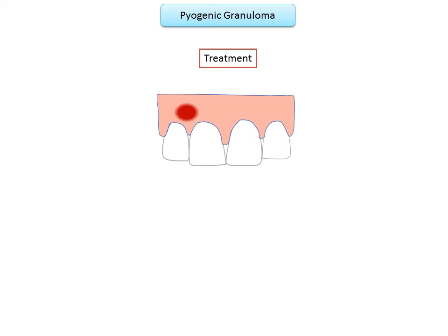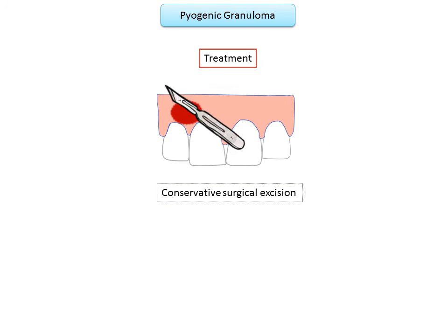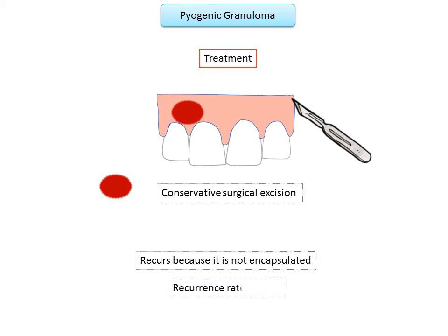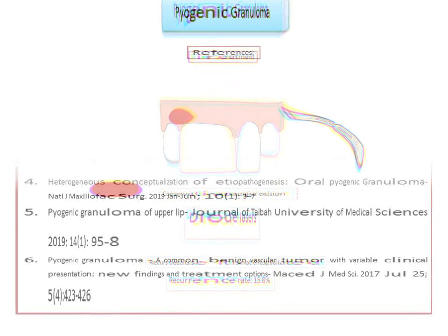Treatment of pyogenic granuloma involves conservative surgical excision including the connective tissue from which the lesion arises, along with removal of local etiological factors such as plaque, calculus, foreign materials, and sources of trauma. Failure to remove the source of trauma may lead to recurrence, with a reported recurrence rate of 15.8%. Other methods include diode lasers with wavelengths between 808 to 980 nanometers.